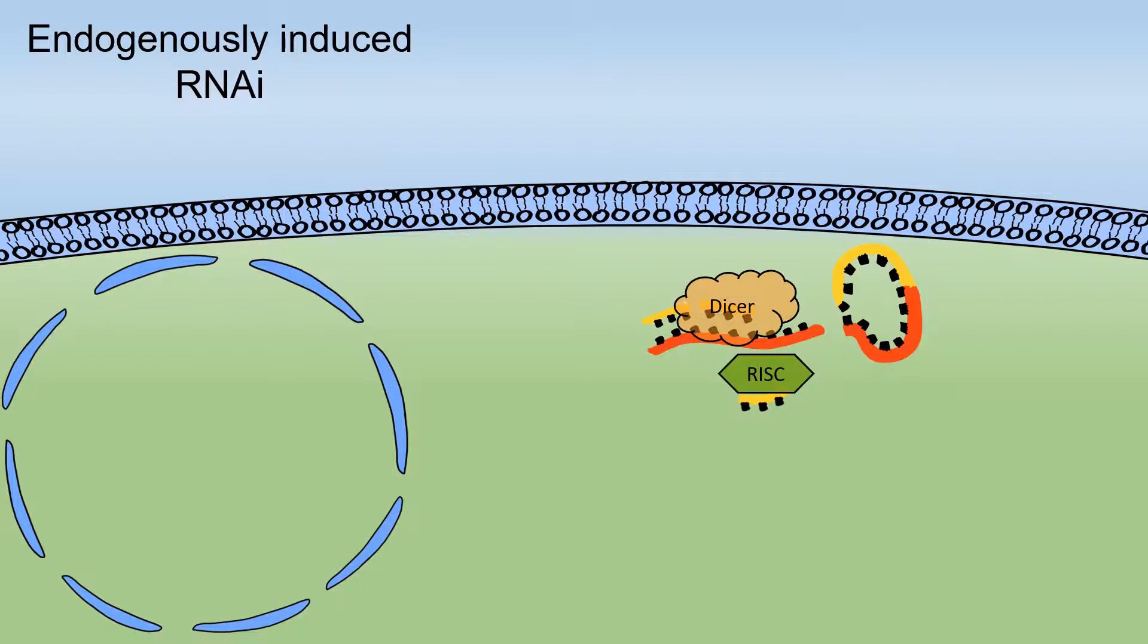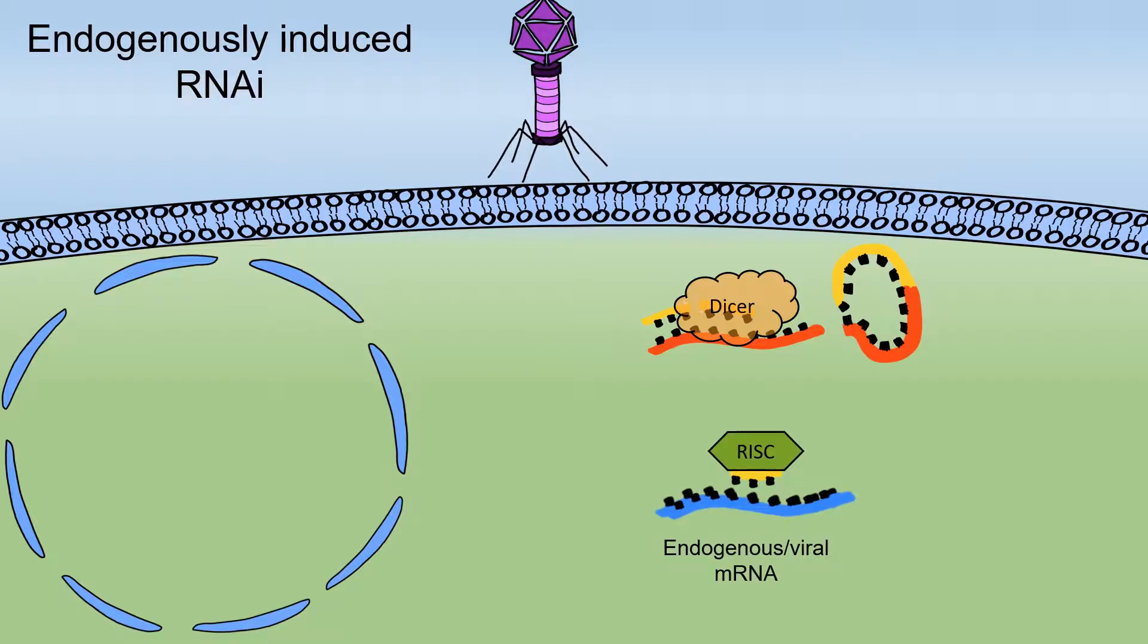Organisms such as the C. elegans utilize these double-stranded RNAs to protect them against virally introduced RNA or to inhibit the synthesis of unwanted proteins.